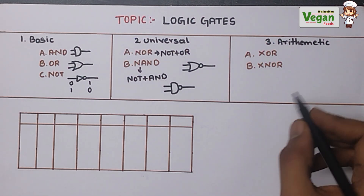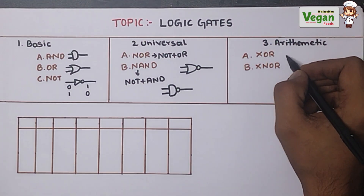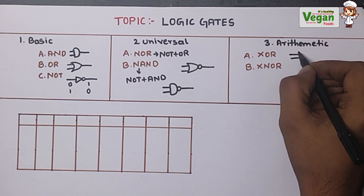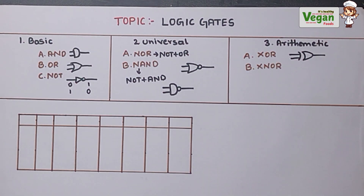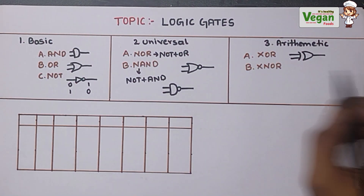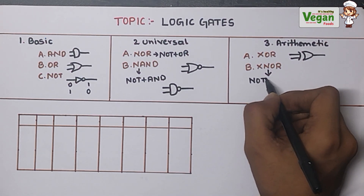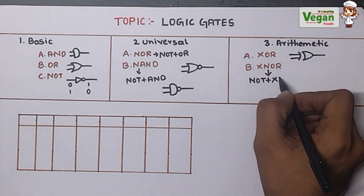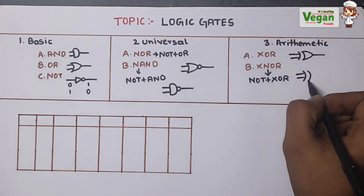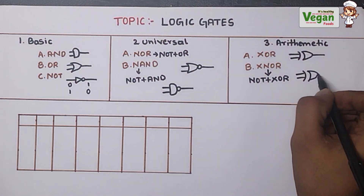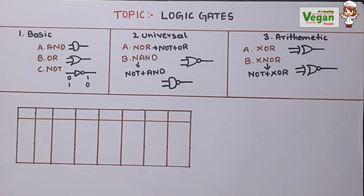For arithmetic gates, we have two types: XOR and XNOR. The XOR gate has its own block diagram representation. The XNOR gate is the combination of NOT gate with XOR gate — we take the XOR gate representation and add the NOT gate in front of it.